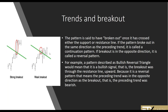Trends and breakouts: a pattern is said to have broken out once it has crossed either the support or the resistance line. If the pattern broke out in the same direction as the preceding trend, it is called a continuation pattern. If the breakout is in the opposite direction, it's called a reversal pattern. For example, a bullish reversal triangle means it's a bullish signal — the breakout was through the resistance line upward — and because it is a reversal pattern, the preceding trend was bearish.